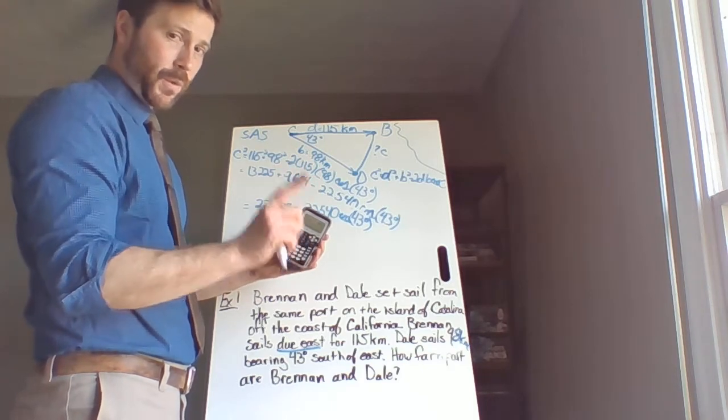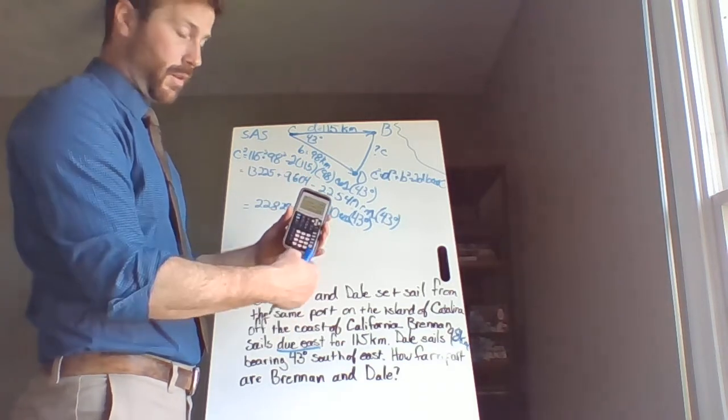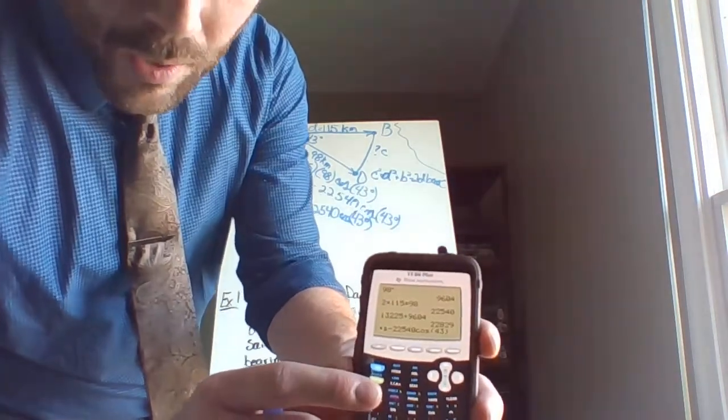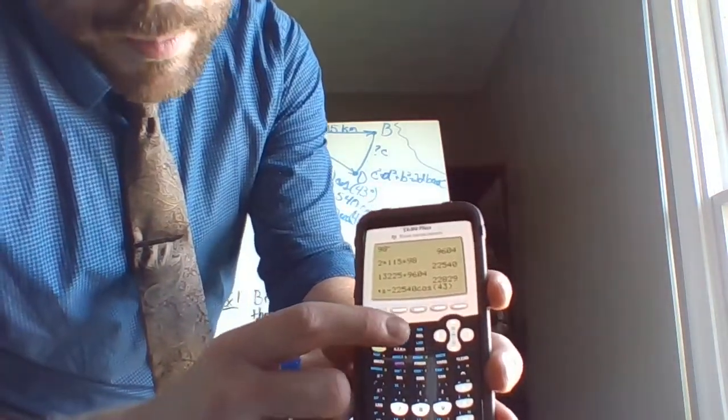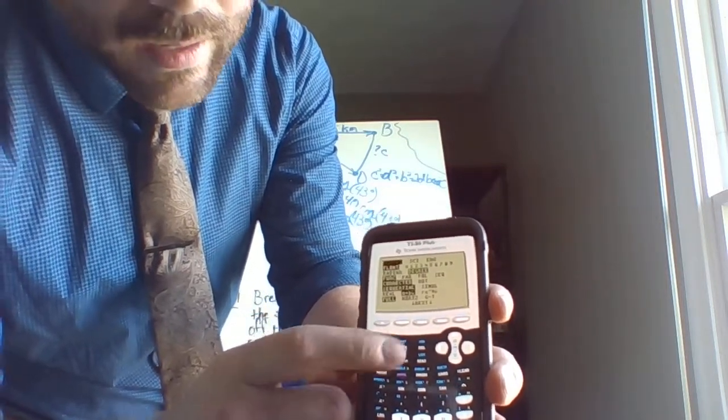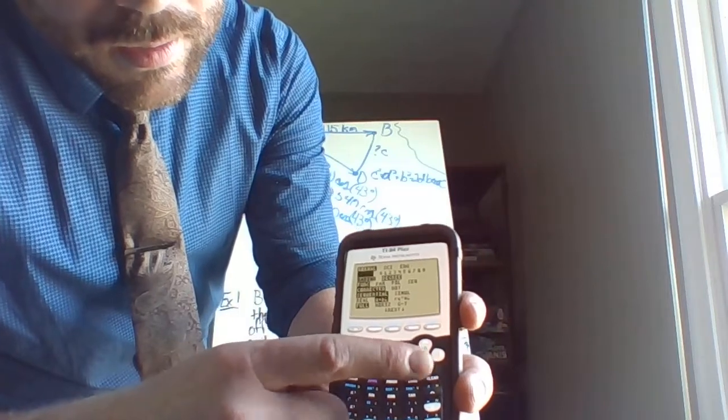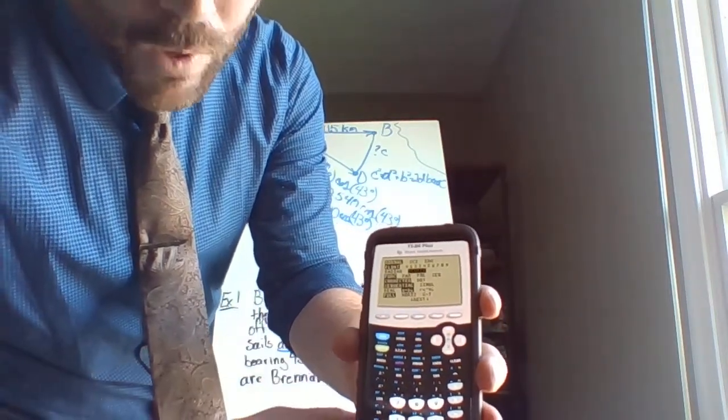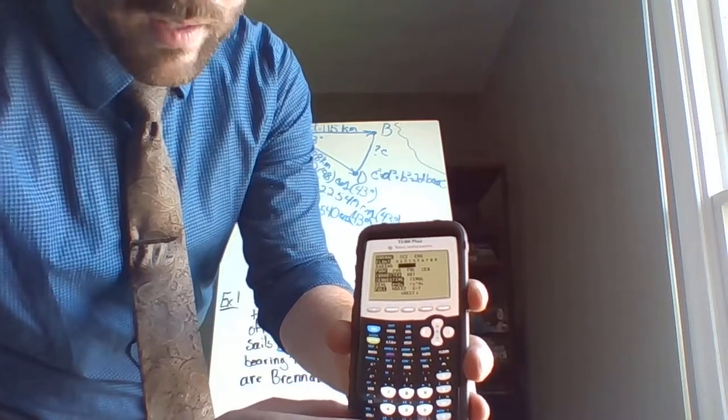So I've got this number minus 22,540 times the cosine of 43 degrees. Now remember, anytime we're talking about sine, cosine, or tangent on one of these calculators, we want to make sure we're in degree mode. So we come up here, this button right here that says mode. We tap that. And we scroll down a bit. It's the third one down. Make sure that we are in degree mode. If we're in radian mode, it will give us wrong answers.